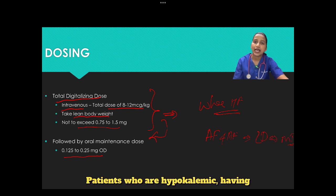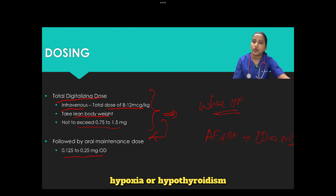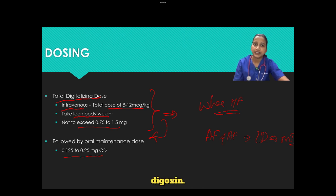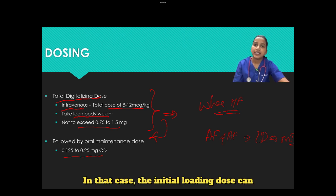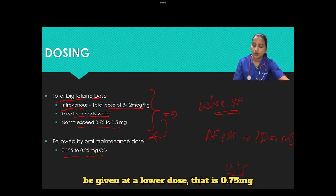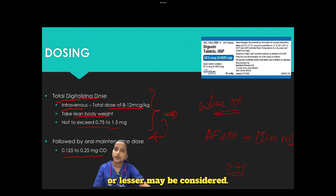Patients who are hypokalemic, have hypomagnesemia, hypercalcemia, hypoxia, or hypothyroidism are more sensitive to the effects of digoxin. In those cases, the initial loading dose can be given at a lower dose of 0.75 mg or lesser.